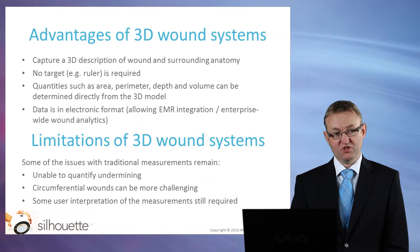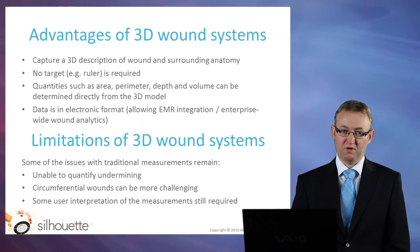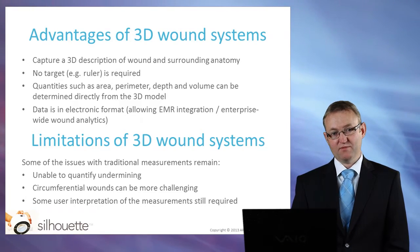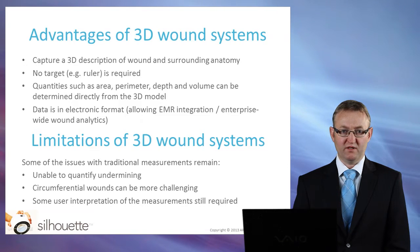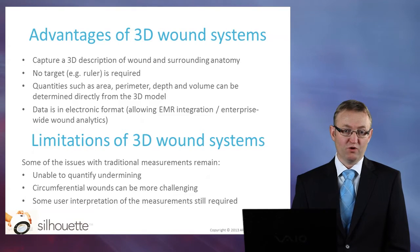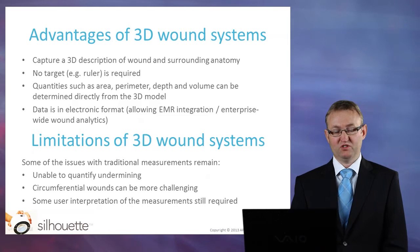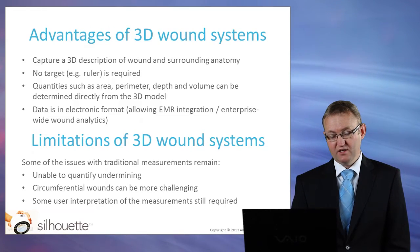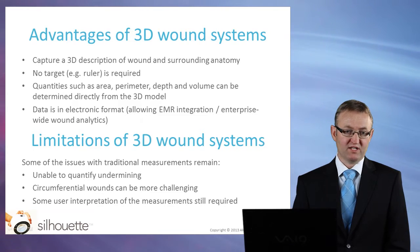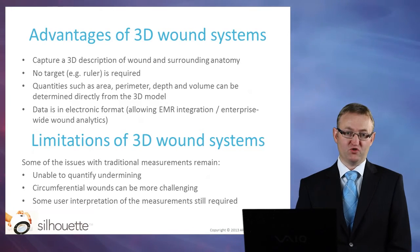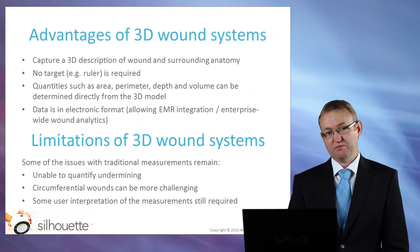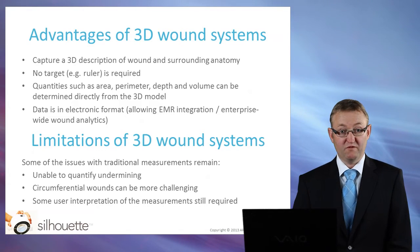Now there are also some issues of traditional wound measurement that remain with these 3D wound measurement systems. For example, they are unable to determine the degree of undermining. Also, circumferential wounds can be more challenging, although even large and quite extensive wounds can still be imaged and measured. Some user interpretation is required of the measurements obtained with 3D systems — for example, if you have a large circumferential wound that is reasonably superficial and you obtain a volume measurement, care still needs to be taken in terms of how that volume measurement is interpreted.